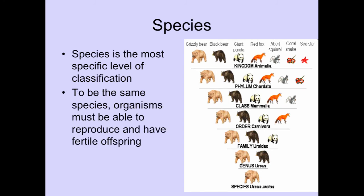The species is the most specific level of classification. To be the same species, organisms must be able to reproduce and have a fertile offspring — fertile means the offspring is able to reproduce. For example, people talk about mixing lions and tigers to make a liger or tigon. You do produce an offspring, but it is infertile, meaning it cannot reproduce anymore. This proves that even though tigers and lions are extremely closely related and probably in the same family, they are not the same species.